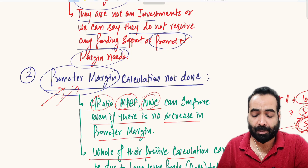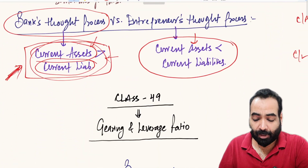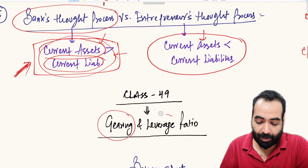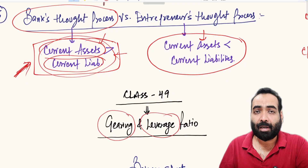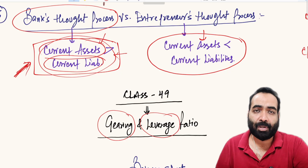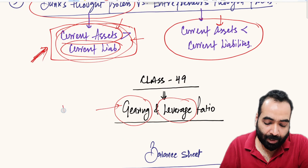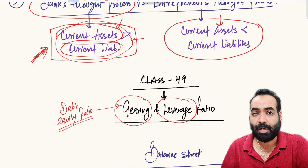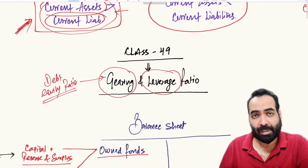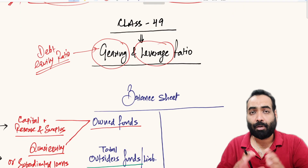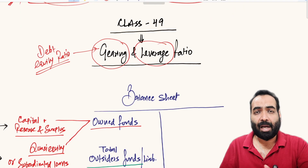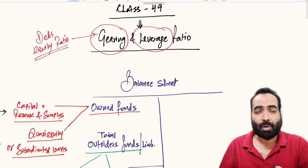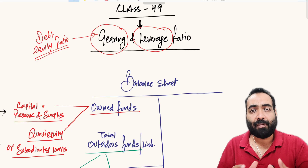The solution is the calculation of gearing and leverage ratios. These two ratios cover the point of promoter margin contribution in the business. Gearing ratio is also called debt equity ratio — you may have heard this term before. Before starting, I have already cleared the concept of promoter margin, quasi equity, and subordinated loans in previous videos, so I hope you remember those concepts.